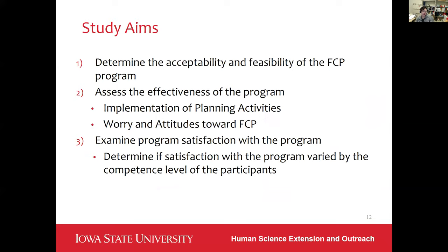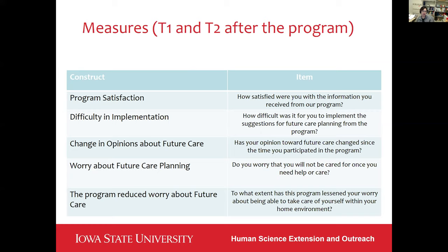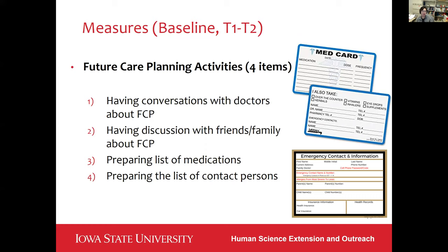Our study aims were to determine the acceptability and feasibility of the program, to assess the effectiveness of the program, and to see whether the program was satisfying for participants as well as facilitators. We used the following measures to assess feasibility, acceptability, and program impact on psychological state among participants: program satisfaction, difficulty of implementation, changes in opinions about future care planning, worry about future care planning, and whether the program reduced worry about future care. In terms of assisting future care planning activities, we asked whether participants had a conversation with doctors about future care planning, whether they discussed it with friends and family, whether they prepared a list of medications, and whether they prepared a list of contact persons in case of emergency.